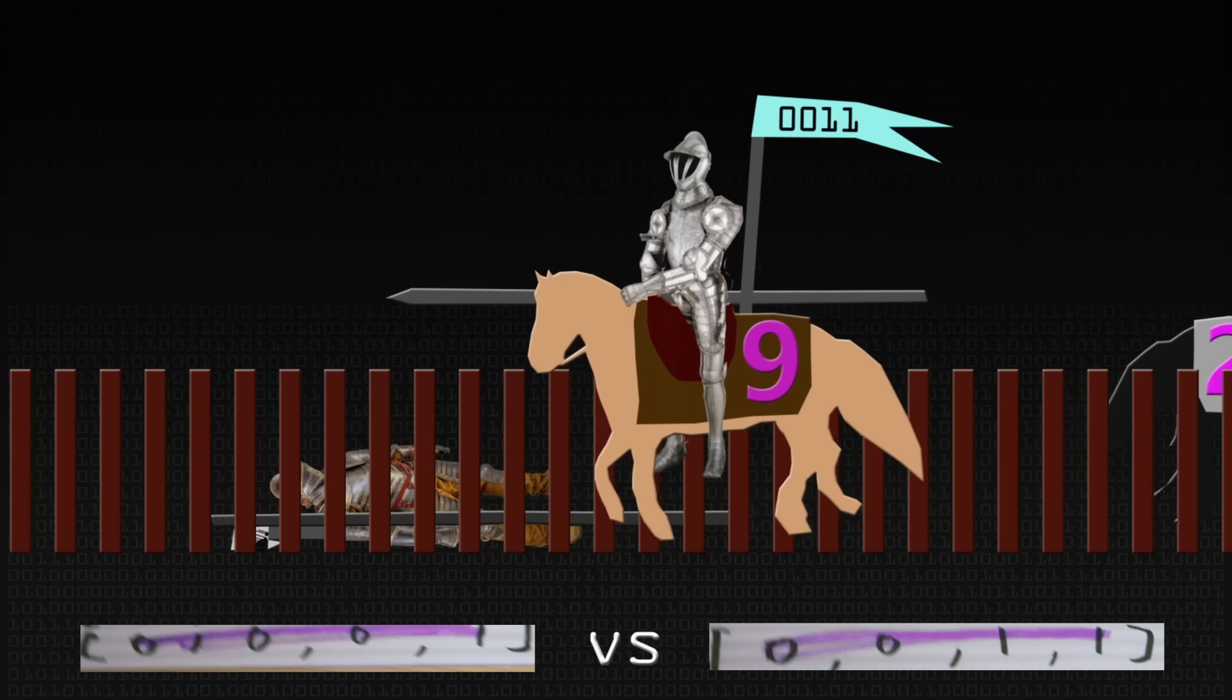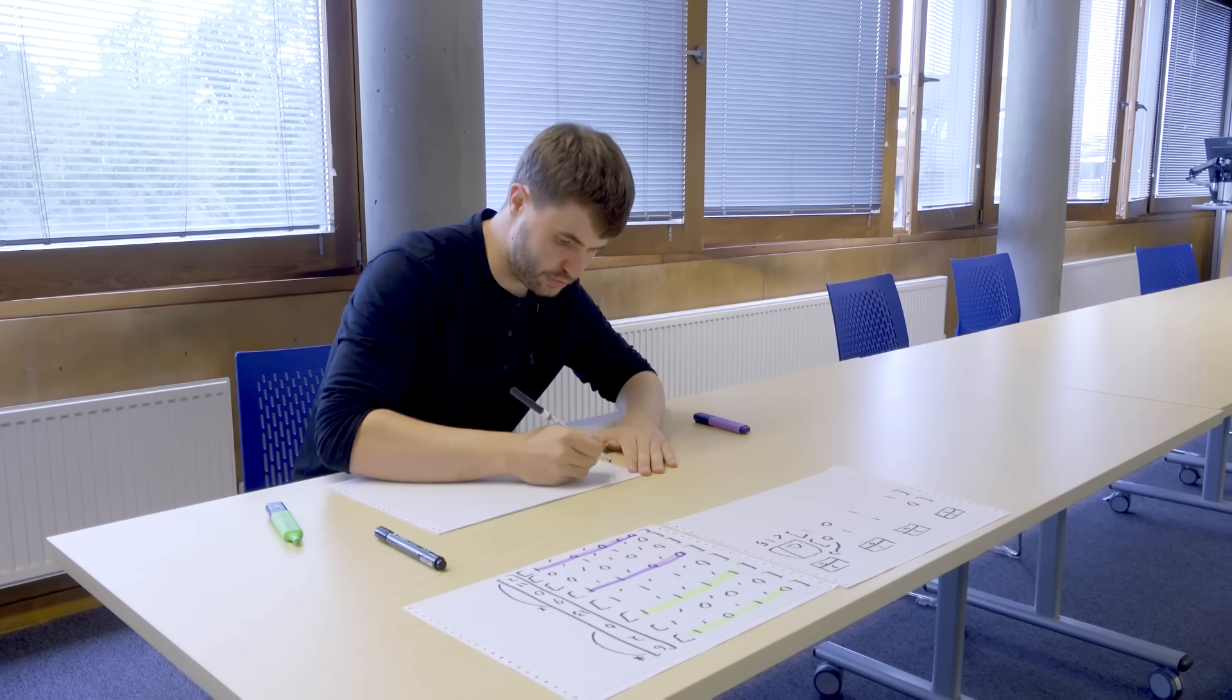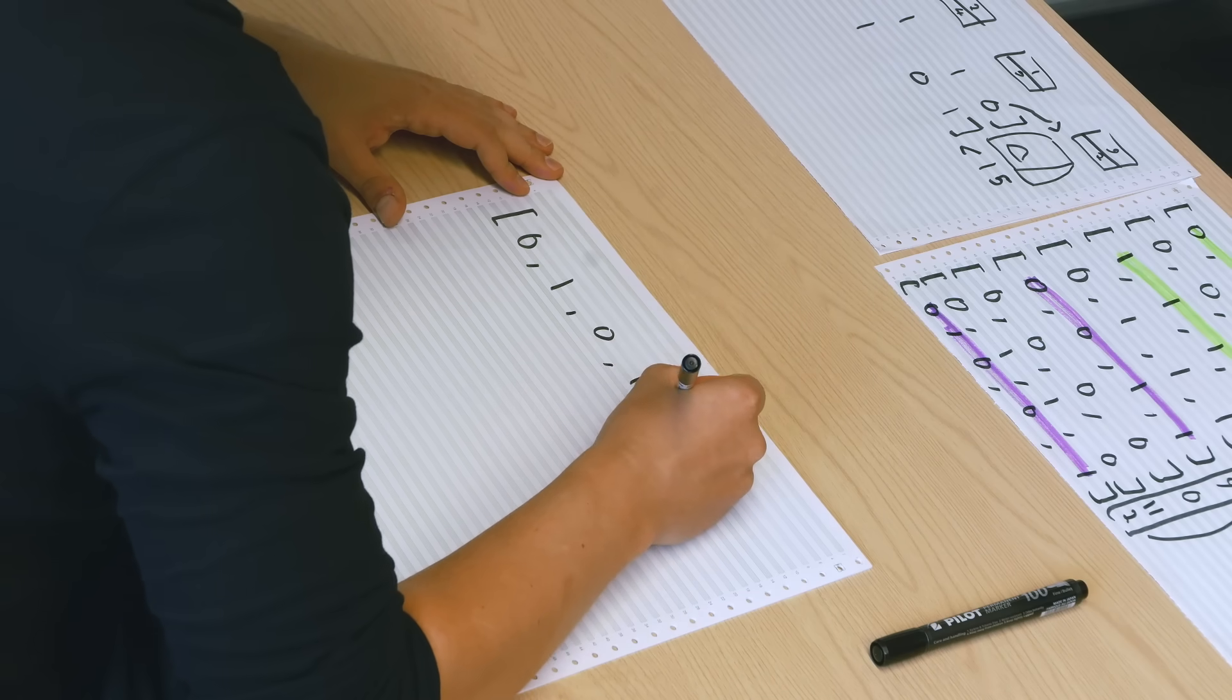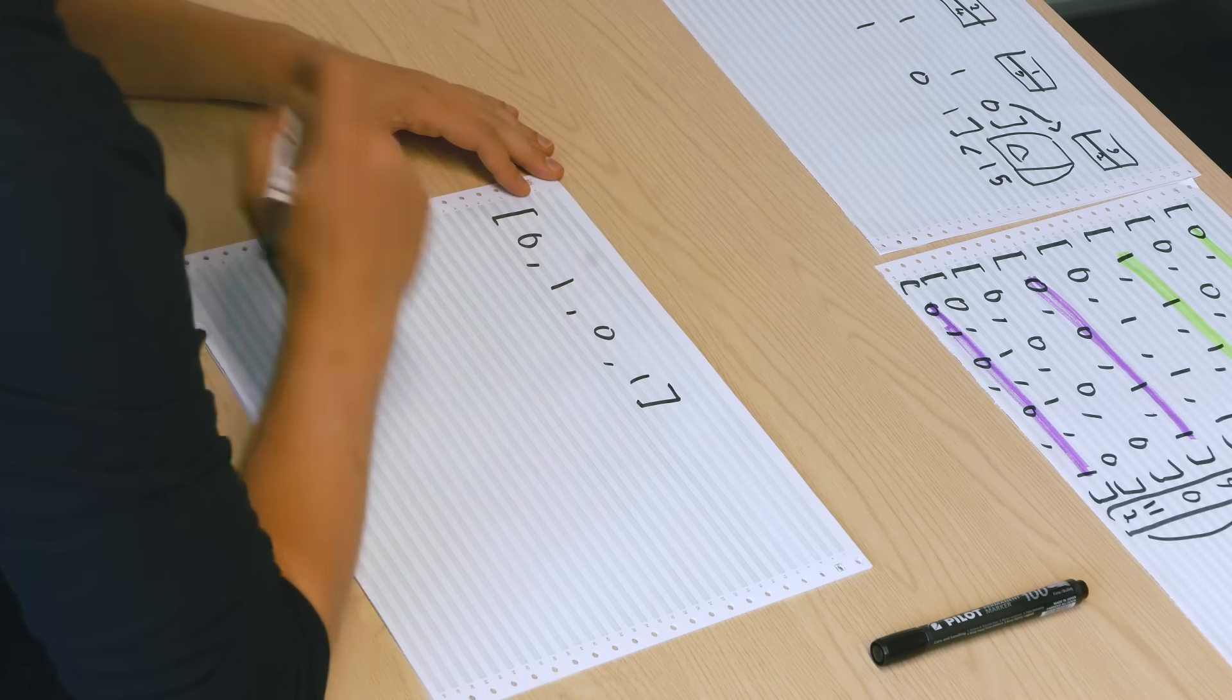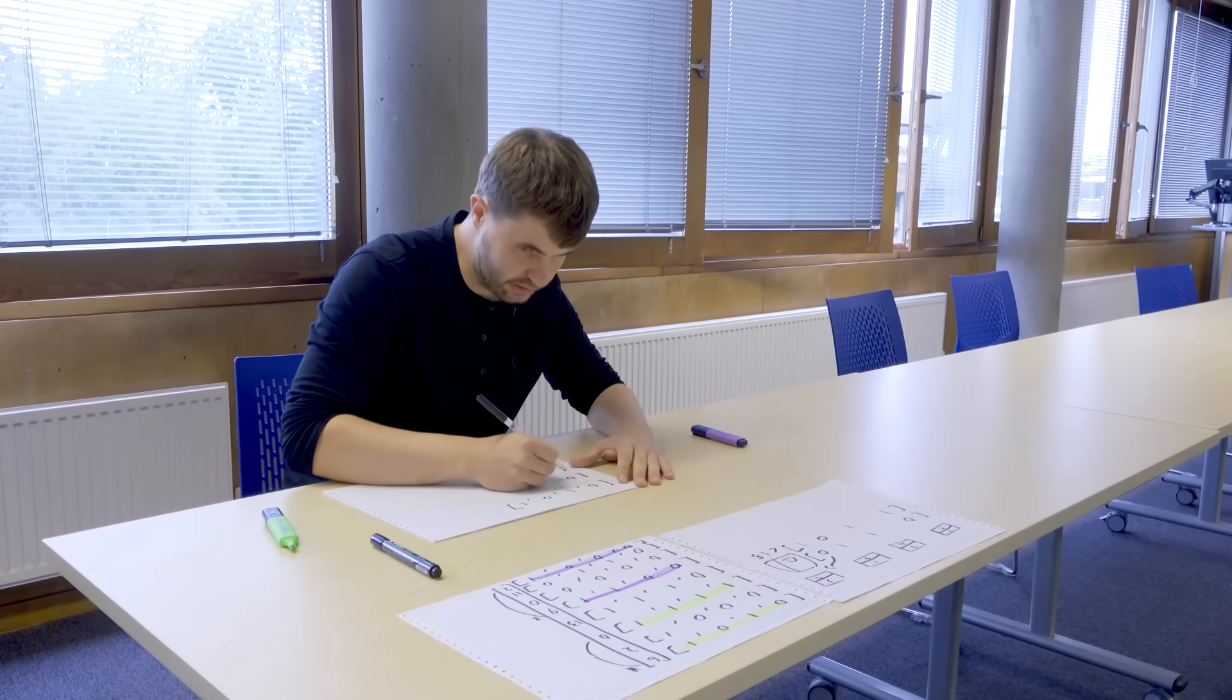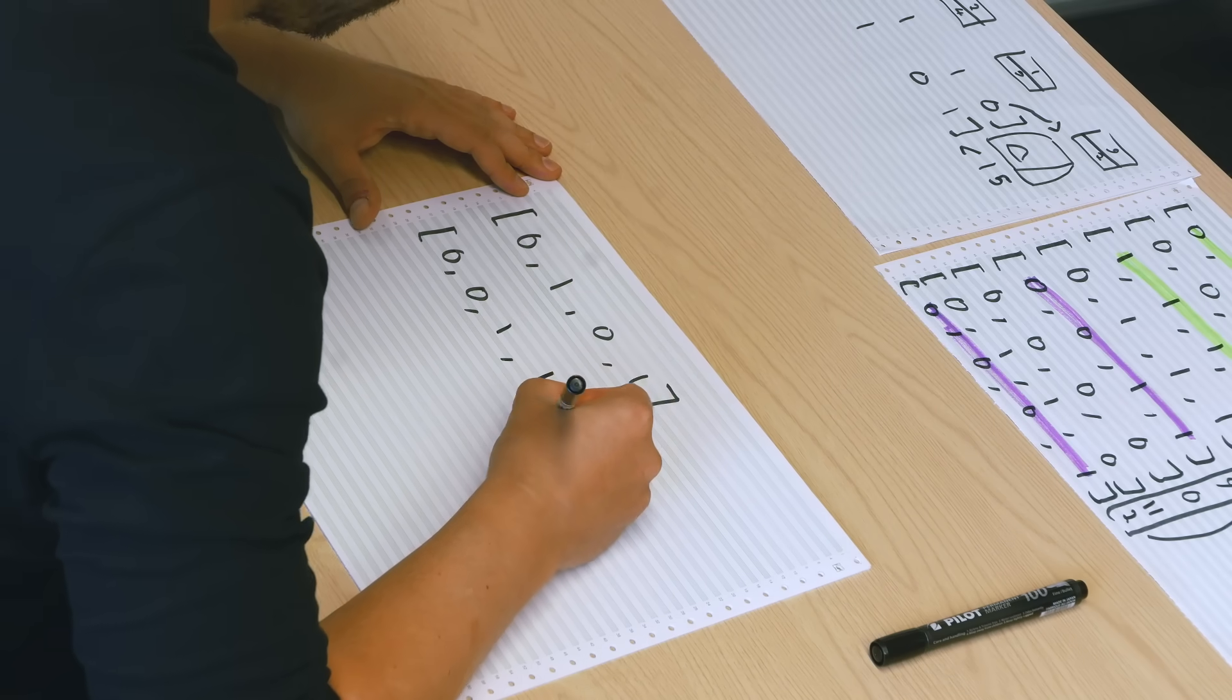These two have a little battle and it's this one that wins. We've now got our two parents which we will draw here so they were the lucky winners of the tournaments. We've got 0, 1, 0, 1. For the other parent we've got 0, 0, 1, 1.